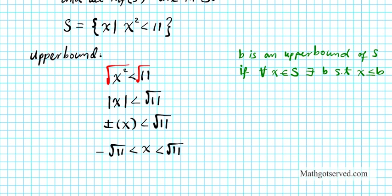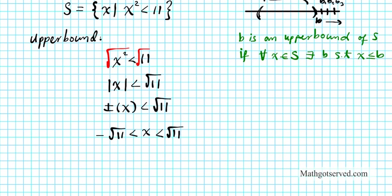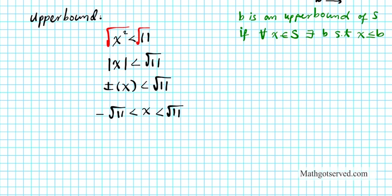Let me give you a visualization. If we have a number line with an open bounded set, and B is to the right of the set, then B is an upper bound because every member of the set is less than B. But B is one of the upper bounds — any number bigger than B going to the right, like B1, B2, B3, are all upper bounds of S.